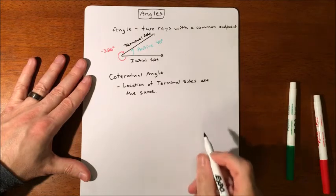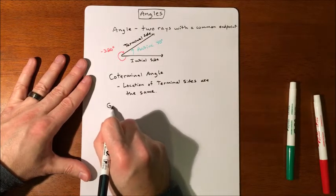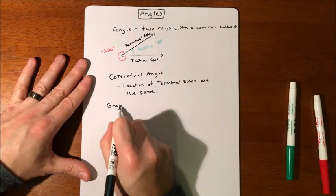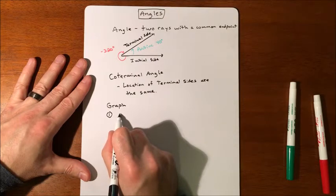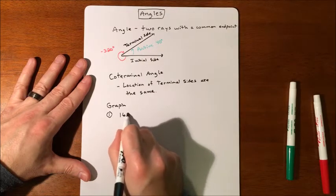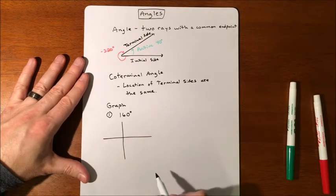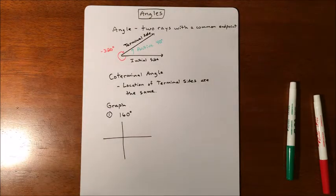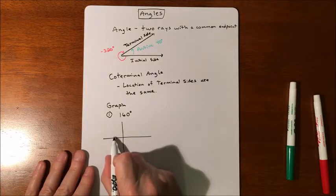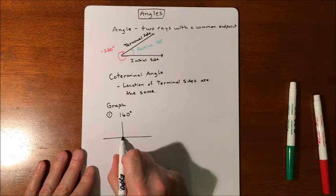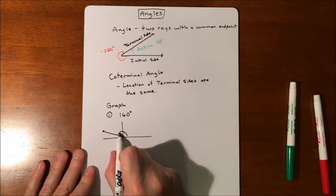So if you were to draw something like, let's say we graph 160 degrees. So in the trig world, we start putting things onto x and y axes, and we're going to draw 160 degrees. Well, 160 degrees is 20 degrees shy of 180 degrees. So we're looking at that.